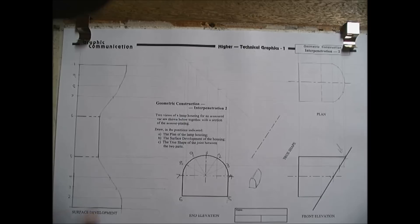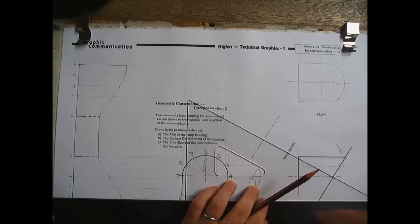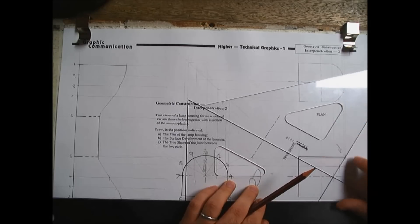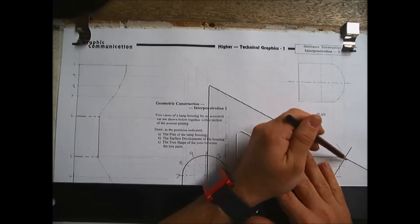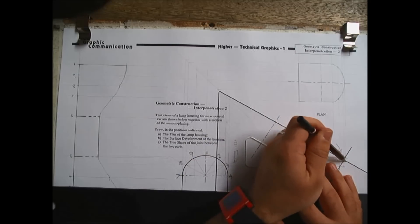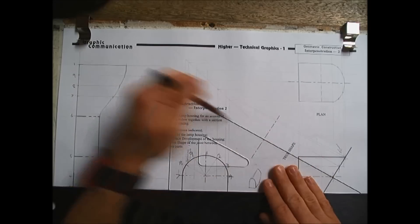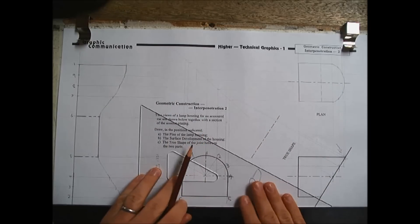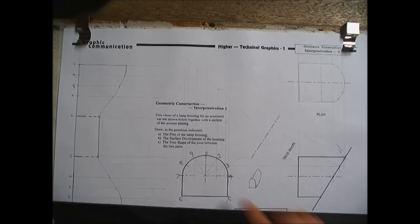The last thing this drawing asks you to do is a true shape. Now, true shapes are projected perpendicular to the surface that you draw it from. So, that's 60, so the perpendicular would be 30. If you want to check, you can always put your 45 like that and you can see it's 90 degrees. So, we project up all the points at the rear of the housing for the armoured light. So, we project them all up. Take our widths from here.